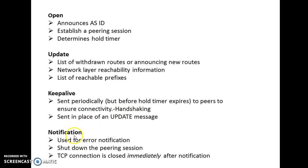The third message is the Keep Alive message, which is similar to a handshaking protocol. It is sent periodically to peers to ensure connectivity — to make sure the neighbor is connected and alive. It is sent in place of an Update message. Notification is used whenever there is some error that needs to be notified to the neighbor router, so it is used for error notification or shutting down the peering session.